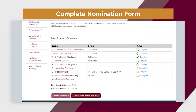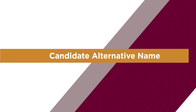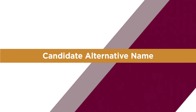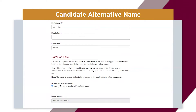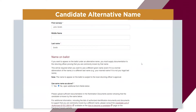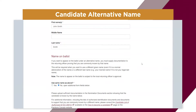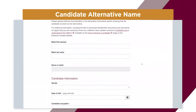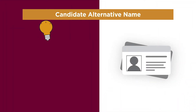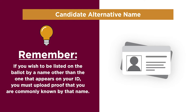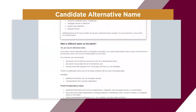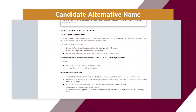This page gives an overview of the sections that have been successfully completed. If you want to appear on the ballot under a different name, check the box under 'Use the same name as above' to open additional fields where you can enter a different name. If you wish to be listed on the ballot by a name other than that which appears on your ID, you must upload proof that you are commonly known by that name. For more information on what counts as proof of an alternative name, see the link in the description below.